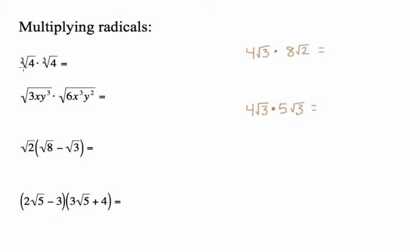When multiplying radicals, as long as the indices are the same, you can multiply what's underneath. So the third root of 4 times the third root of 4 is the third root of 16. Check if this simplifies: the cube root of 8 divides into 16, so split it as cube root of 8 times cube root of 2. The cube root of 8 is 2, so the answer is 2 times the cube root of 2.